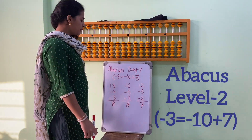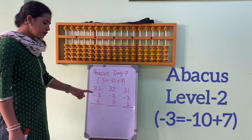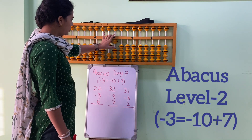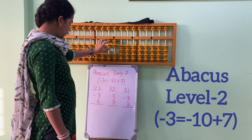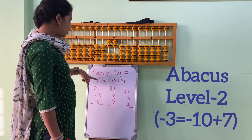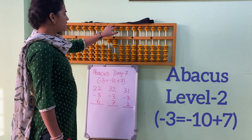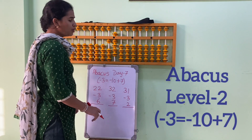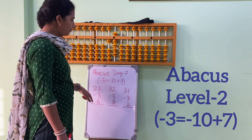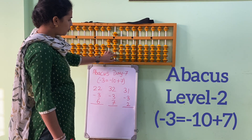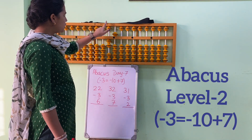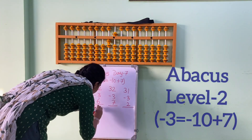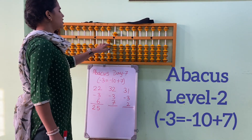So in ka hum dusriye sums bhi dekhenge using this formula. The very first number is 22. 1, 2, 3, 2 plus 2, 22. Minus 3 — minus 3 mein formula yus karenge, minus 10 plus 7. 5, 6, 7. Now add 6. So what is the formula of plus 6? Plus 10 minus 4. 1, 2, 3, 4. So in 10's place we have 2 bits and in 1's place we have 5. That is 25. The answer is 25.